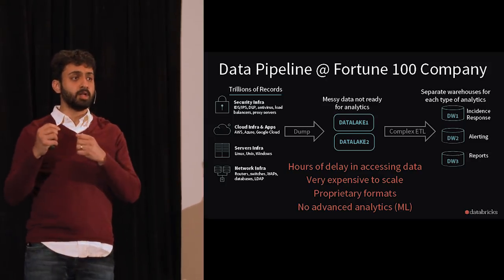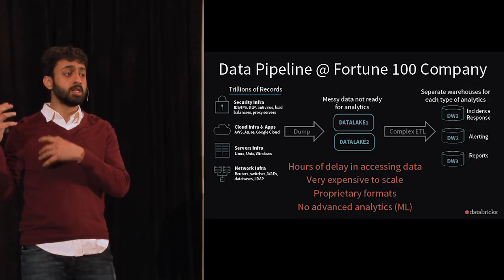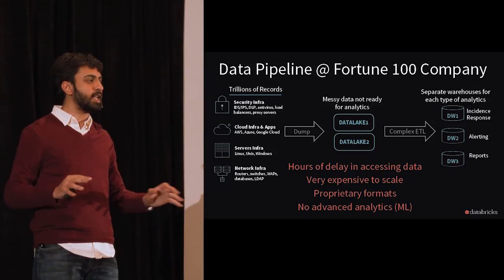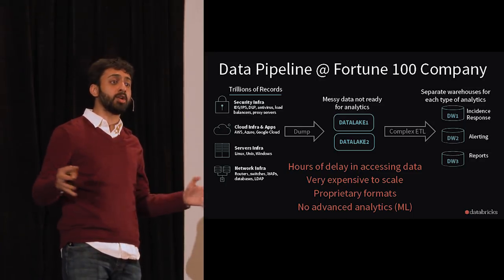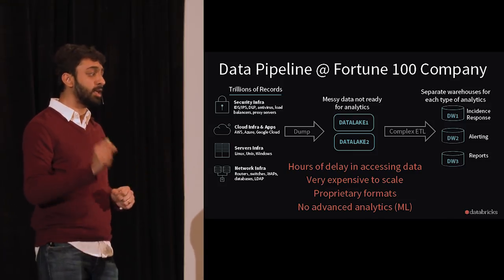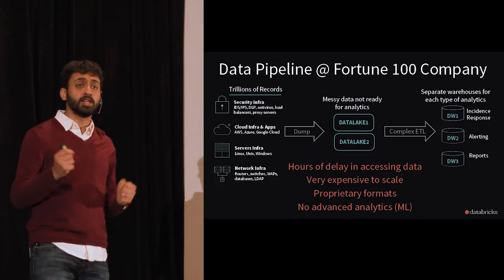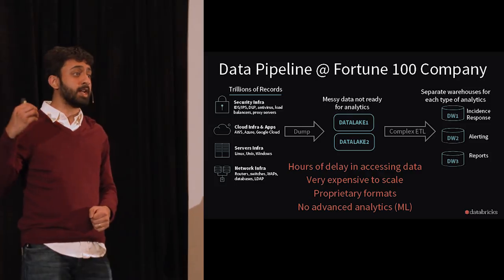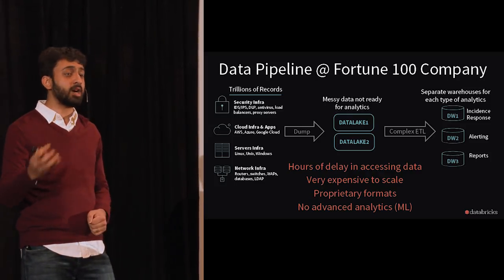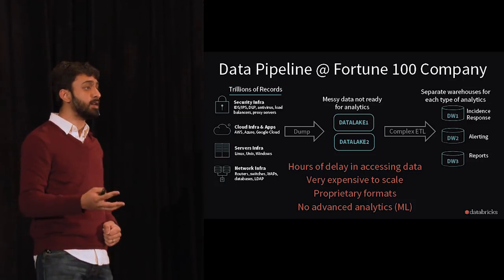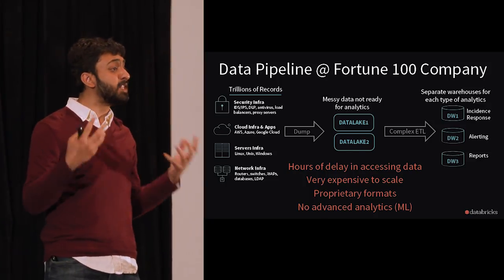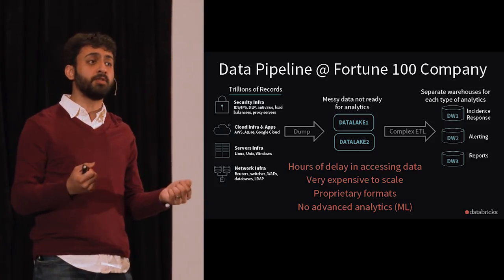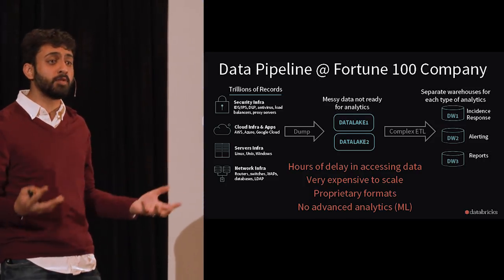They had multiple data warehouses because each was designed and tuned for one particular end use case — alerting requires a certain kind of database, reporting requires a different one, searching requires yet another. This messy architecture of multiple data lakes and warehouses didn't integrate well. The major problems were hours of delay from data generation to the warehouse, prohibitive horizontal scaling costs, data locked in proprietary formats, and no support for advanced analytics like machine learning.